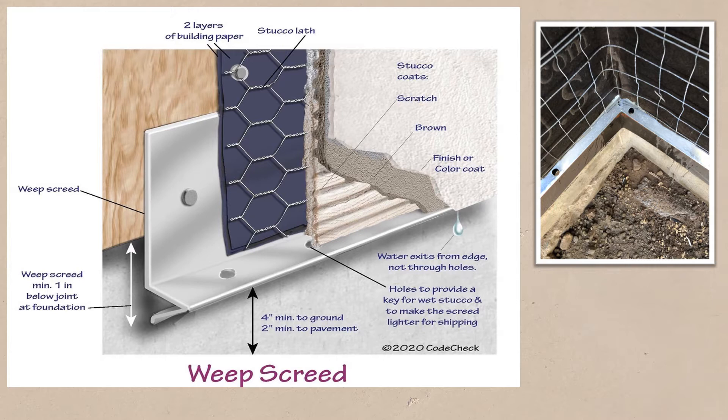The weep screed for stucco was invented in 1952 by an architect working for the Los Angeles Office of the Federal Housing Administration, or FHA. Because it was first required to be on a home to qualify for an FHA loan, it developed the nickname FHA screen. This innovative weep screed proved to be an economical solution to an occasional issue.